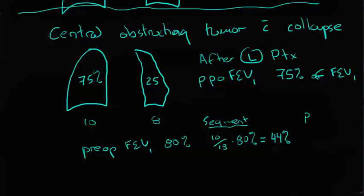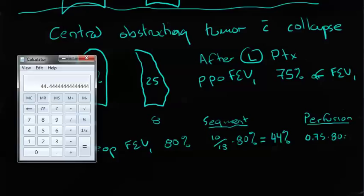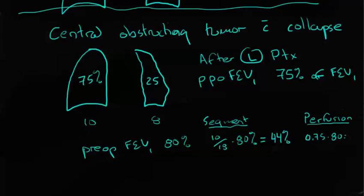But if we use the perfusion method, you'll notice that we actually take 0.75 times 80, which is going to equal, we don't need the calculator, do we? 0.75 of 80 is going to be 60%.